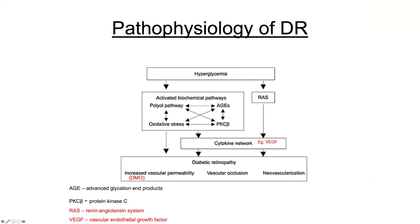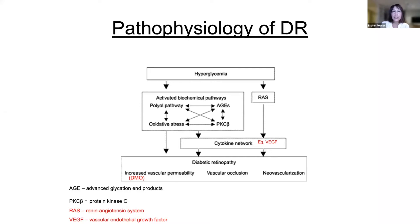The pathophysiology of retinopathy — the key points are that it's all about high blood sugar. Diabetic retinopathy is all about hyperglycemia activating cytokine pathways within the cells. Two things I've picked out are the cytokine network involving VEGF, which is very important in our treatments, where the increased vascular permeability comes in.